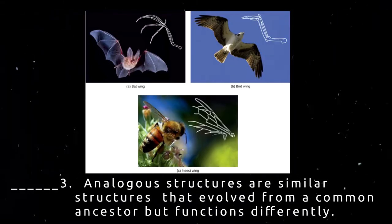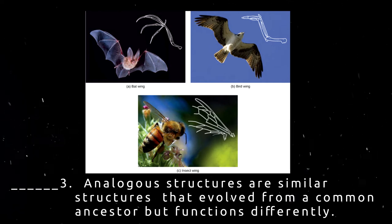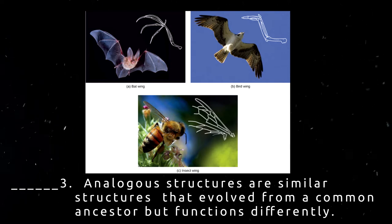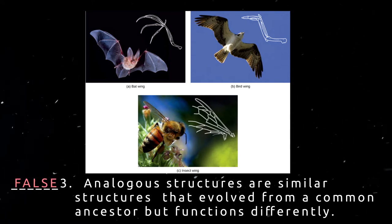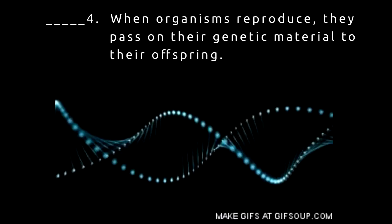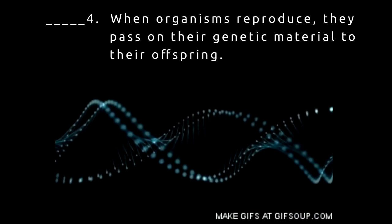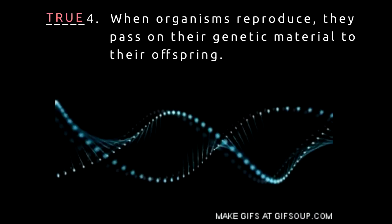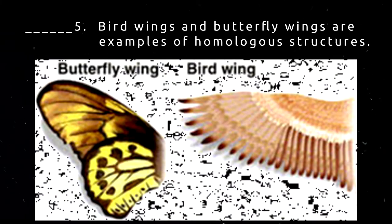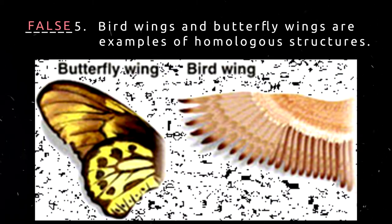For number three, analogous structures are similar structures that evolved from a common ancestor but function differently — this is a false statement. Number four, when organisms reproduce, they pass on their genetic material to their offspring — this is true. And for number five, bird wings and butterfly wings are examples of homologous structures — this is false.